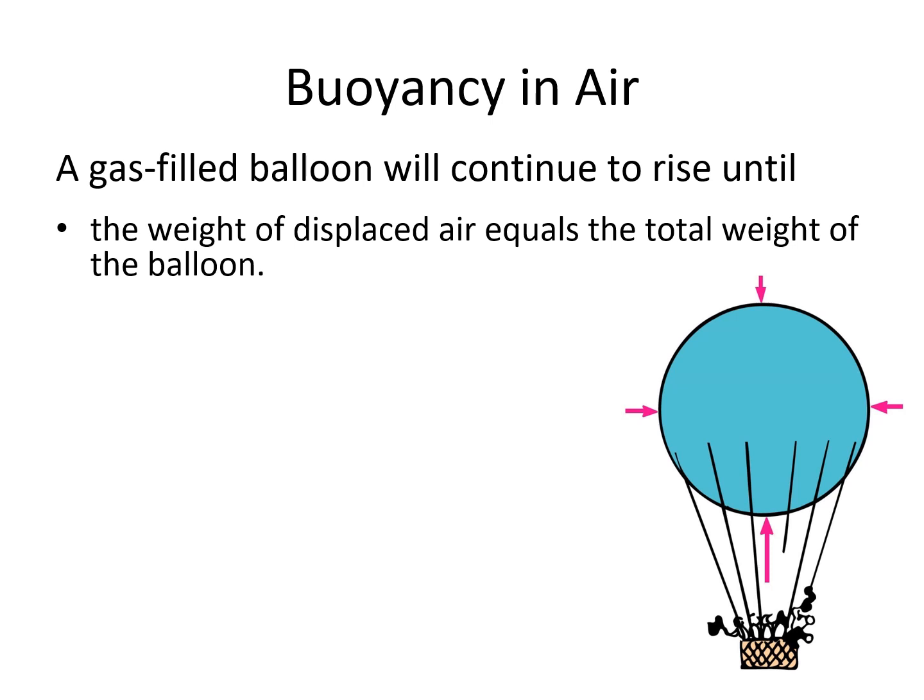Balloons can go up until the weight of the displaced air equals the total weight of the balloon — at that point it will not rise any further. If at any point it weighs more than the surrounding air, it's going to sink. What we're always really comparing is the density: if the density of the balloon is less than the density of the air, it can float. If they're the same, it will float but won't go up or down. If the balloon's density is greater, it will sink.